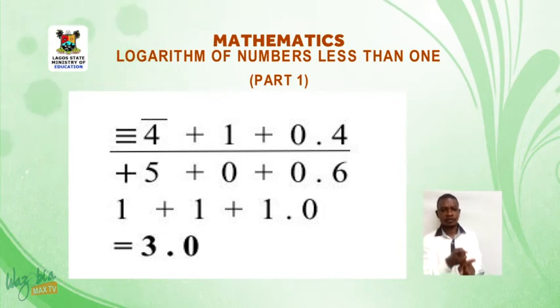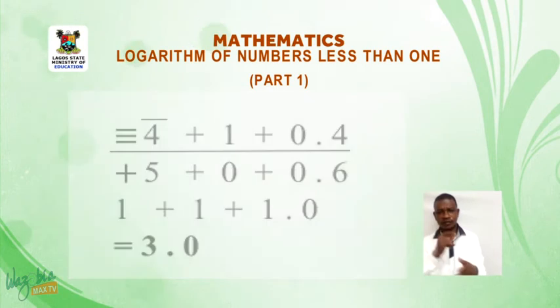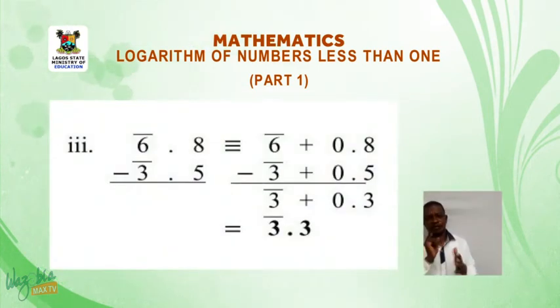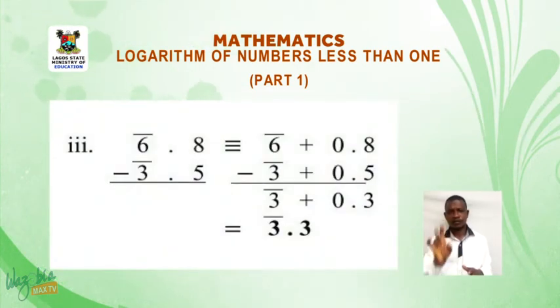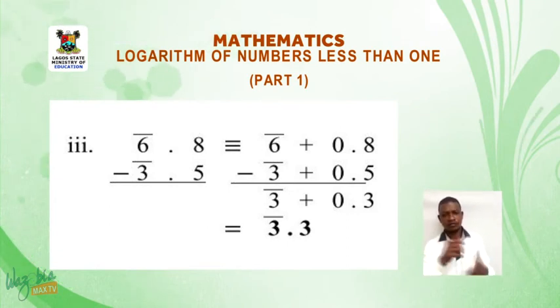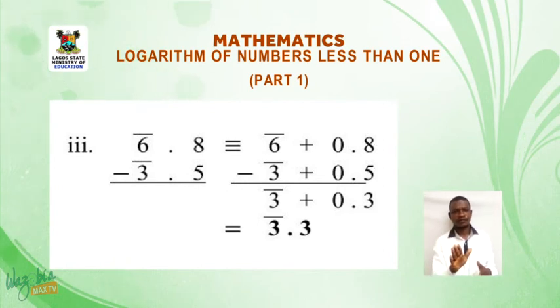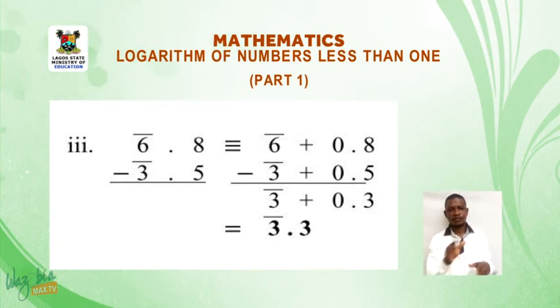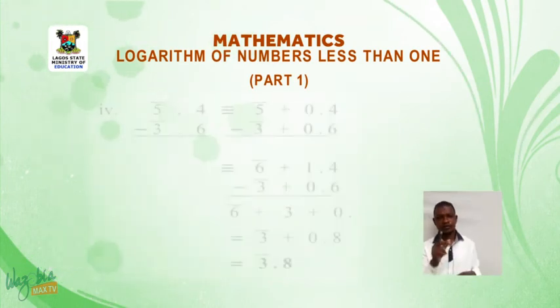The third example: bar 6.8 minus bar 3.5 is equivalent to bar 6 plus 0.8 minus bar 3 plus 0.5. This gives us bar 3 plus 0.3, which is equal to bar 3.3.